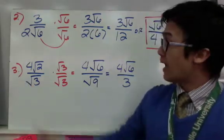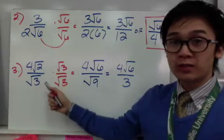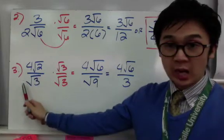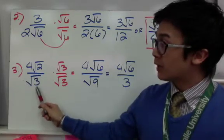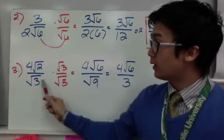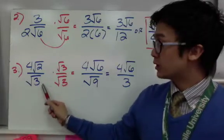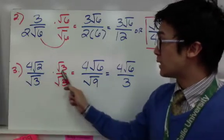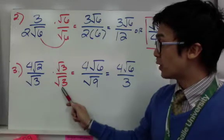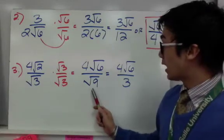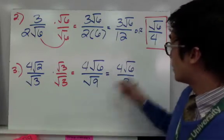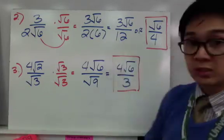For number 3, you have two radicals, both in the numerator and the denominator. To avoid confusion, just focus on the denominator — make sure it becomes a real number. Multiply the top and bottom by square root of 3. So 4 square root of 2 times square root of 3 gives you 4 square root of 6, and square root of 3 times square root of 3 gives you square root of 9, which is 3. Your answer is 4 square root of 6 over 3, which is already in simplest form.